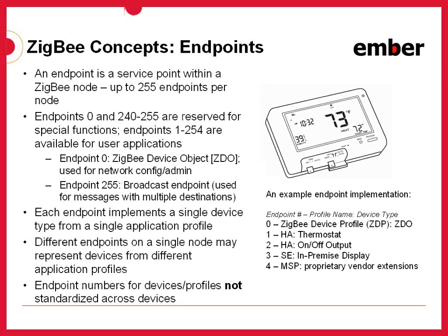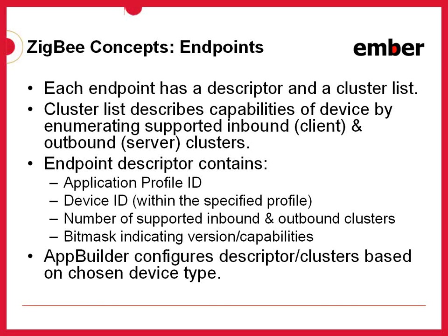Because these endpoint numbers are not standardized other than the reserved endpoints, there's some amount of service discovery that has to happen. When a node enters a network, it needs to query devices to find out what endpoints they have and what services are implemented on those endpoints. Each endpoint, when queried, comes back with a descriptor and a cluster list. The cluster list is the list of client clusters and server clusters supported on that device. The descriptor provides information about which profile that endpoint is implementing, which device within that profile is being implemented, how many inbound and outbound clusters it has, and a special bit mask for indicating a version or set of capabilities.